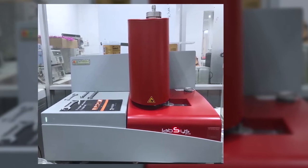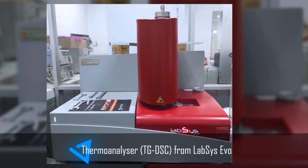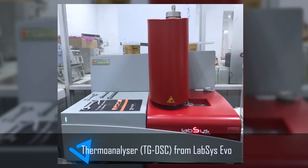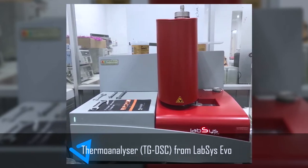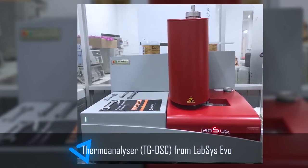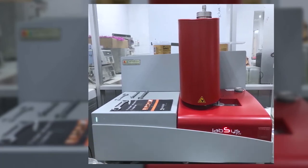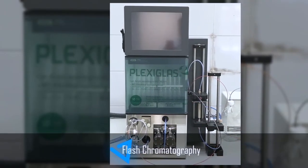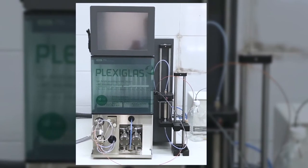Thermal analyzer TG-DSC from LabSys Evo is a specifically instrument used for basic scientific research and material science. It is utilized for determining the changes in phase properties of the samples. Especially, it allows determining essential parameters such as thermal stability and heat flow of materials. The central laboratory for analyzers is also equipped with flash chromatography used to purify organic compounds.